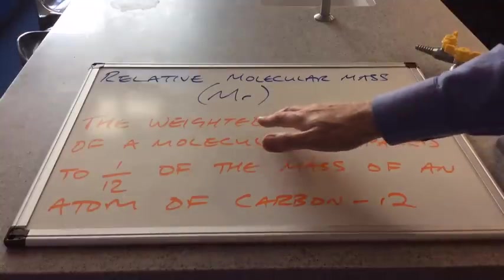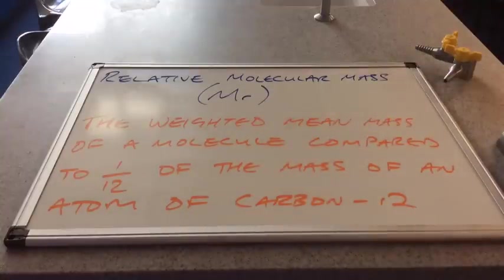Why weighted mean? Well obviously molecules are made from atoms, and atoms exist as isotopes. Atoms of an element don't all have the same mass, so the mass of the atom is the weighted mean mass. And so if these atoms make up molecules, you've got to use weighted mean mass again.